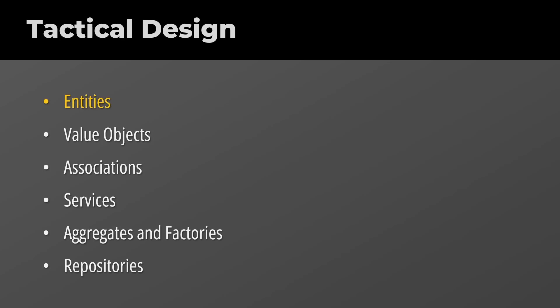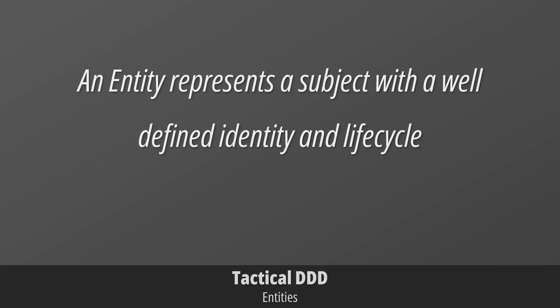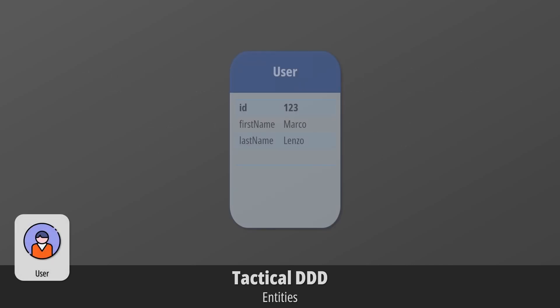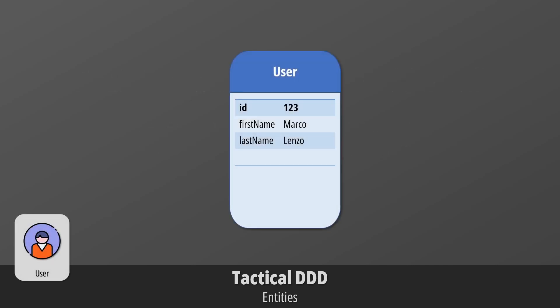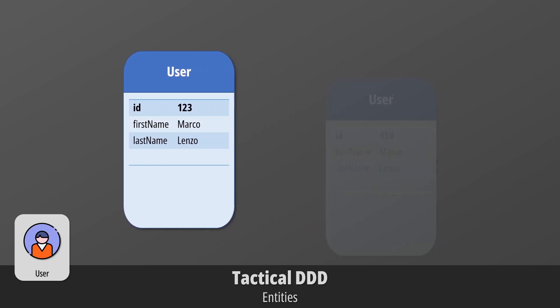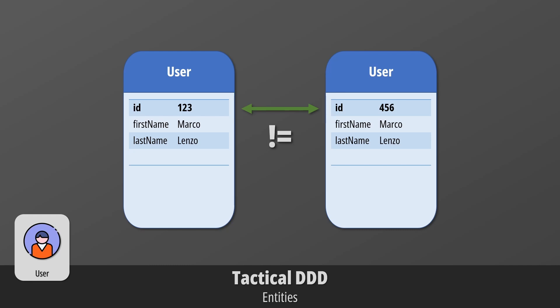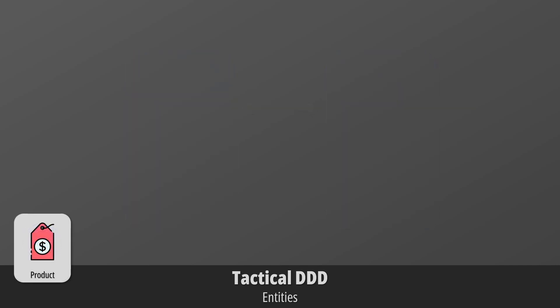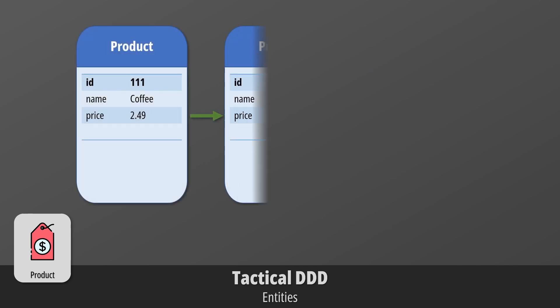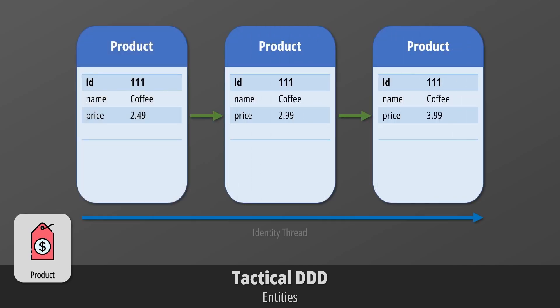An entity is a class mapping a subject or object with a well-defined identity and life cycle. Entities must have unique identifiers since their equality is not based on their properties. You can have two users with the same first name and last name — thus, you need to add an identifier to distinguish them. During the life cycle of an entity, its state might change while the thread of identity is continued. Imagine a product whose price fluctuates while its identity is constant.